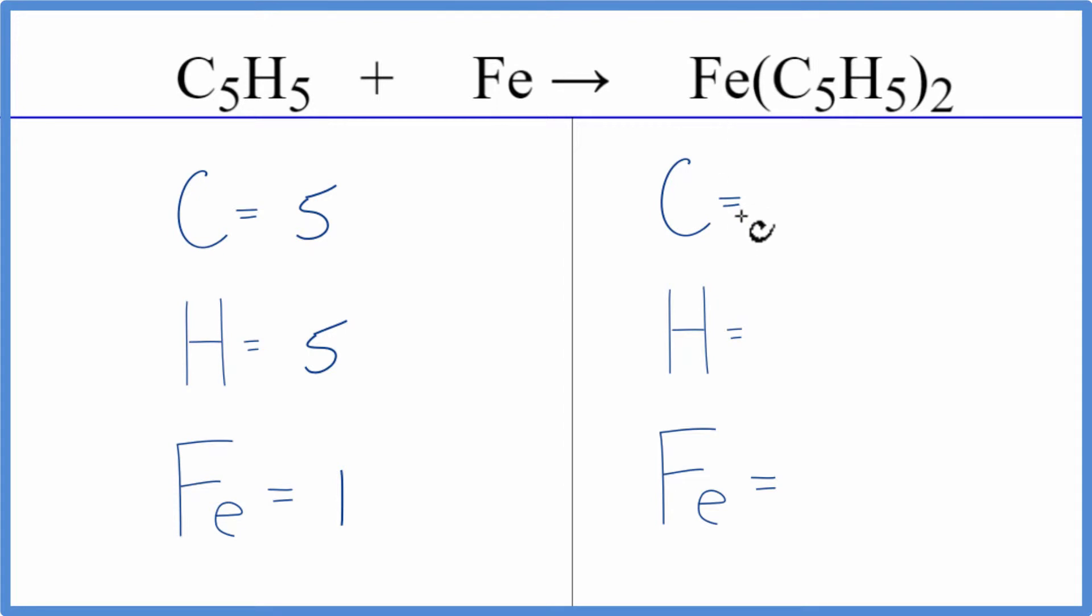On the product side, we have carbons, so this two here, we multiply that by everything in the parentheses. So two times five, that gives us ten carbons. Two times five hydrogens, we have ten of those. And then we have just the one Fe.